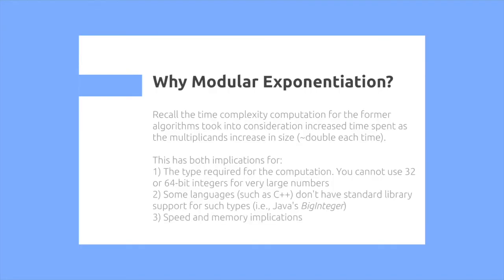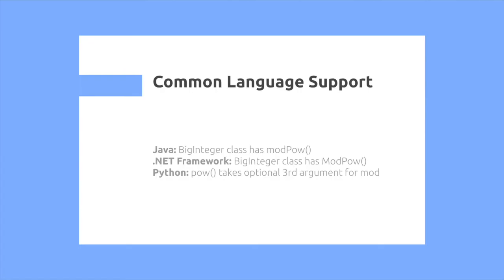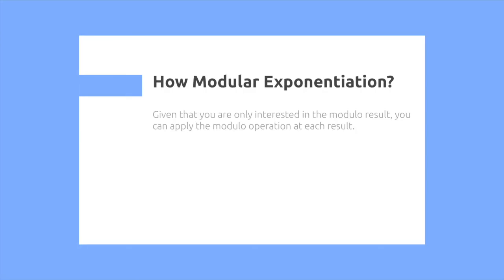Some languages have support for modular exponentiation, such as Java and Python with its POW operator. So how does this work? It uses the fundamental property that a b mod p is equal to a mod p, b mod p, mod p.